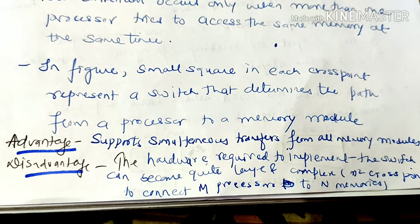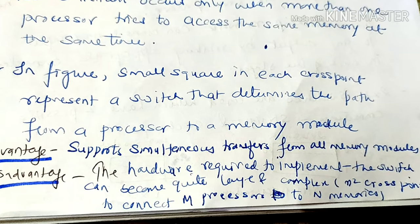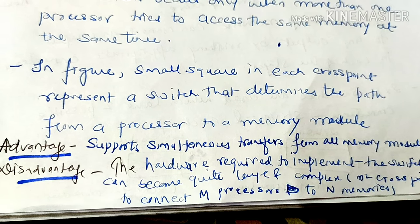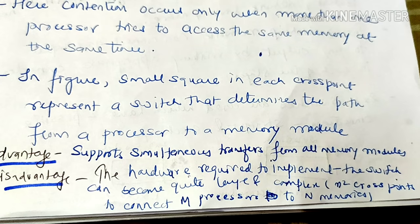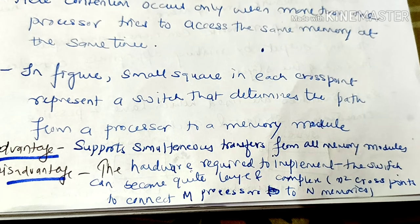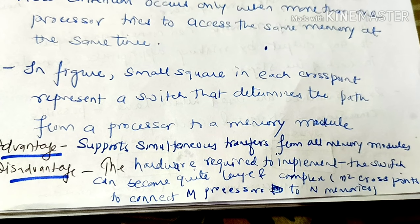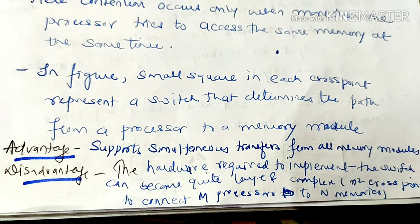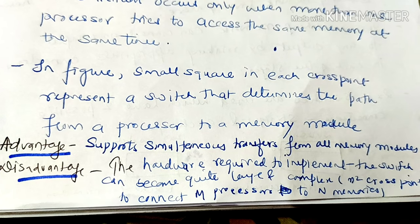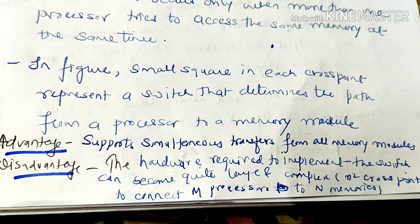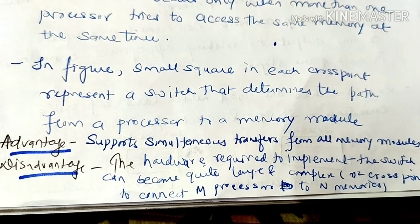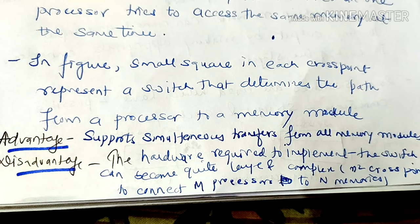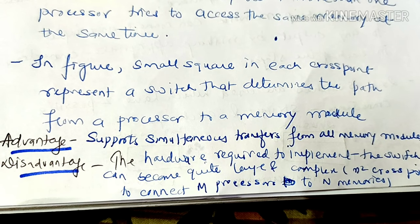Advantage: the crossbar connection system supports simultaneous transfers from all memory modules — data can be transmitted from multiple memory modules at the same time. Disadvantage: the hardware required to implement the switch can become quite large and complex, because n² cross points are needed to connect m processes to n memories. This makes the crossbar connection system complex and large.